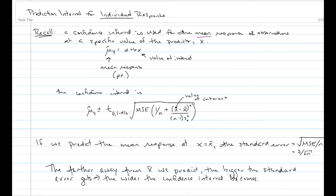Our prediction equation is mu-hat Y, so our mean response or predicted mean response equals a plus bX, where X is a specific value of interest. In that case, mu-hat would be our point estimate, and the confidence interval will be mu-hat Y equals t with nu degrees of freedom, 1 minus alpha over 2 as our left-tail probability, times the standard error: square root of MSE times (1/n plus (X minus X-bar) squared over (n minus 1) times s_X squared).